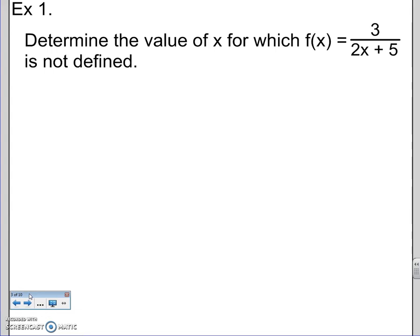So example one, find where it's not defined. Basically, find the restriction. Well, 2x plus 5 cannot equal zero. Just solve that like normal. Subtract five. 2x cannot equal negative five. Divide by two.